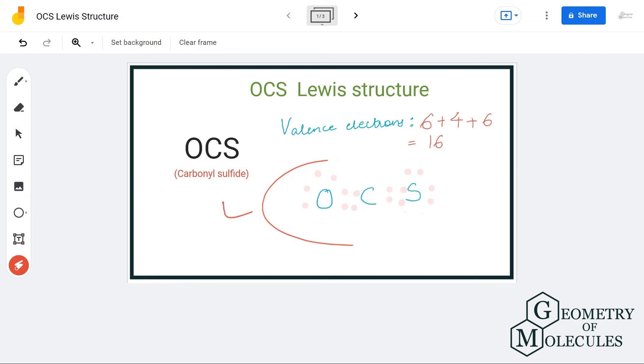That means having eight valence electrons in its outer shell. Hence, this is the Lewis structure of carbonyl sulfide in which carbon atom forms two double bonds, one with oxygen atom and the other one with sulfur atom.